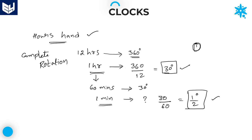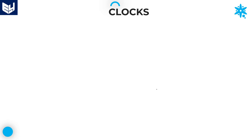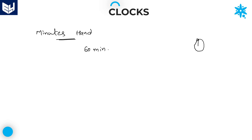So the two important points related to the hours hand are: 30 degrees for every one hour, and half a degree for every one minute. Now I will explain about the minutes hand. One complete rotation of the minutes hand is nothing but 60 minutes, and a complete rotation always indicates an angle of 360 degrees.